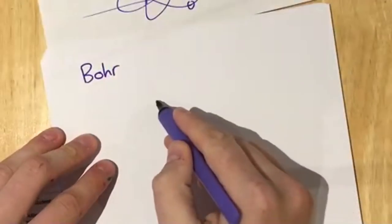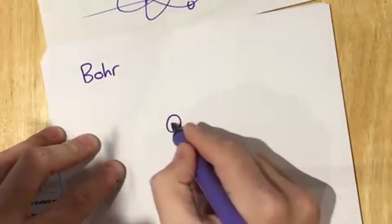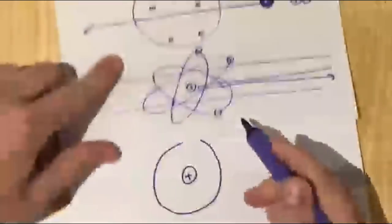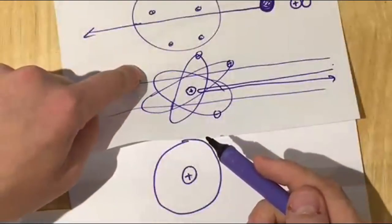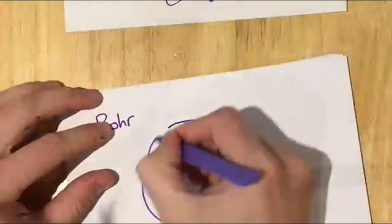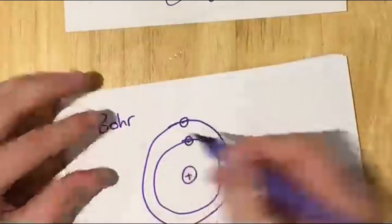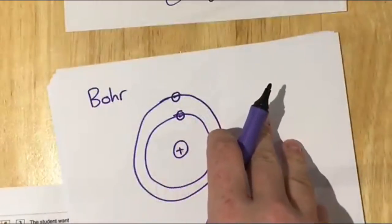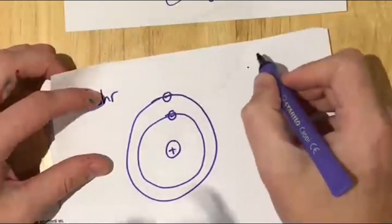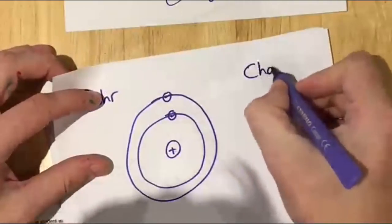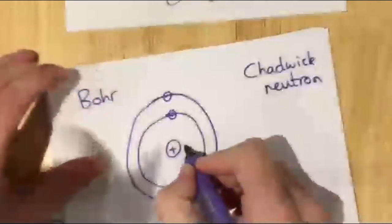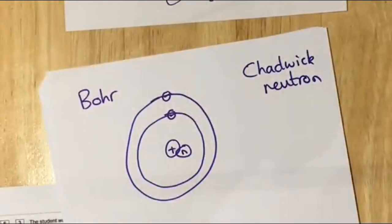Next came Niels Bohr, who showed that instead of electrons moving randomly, they have set orbits — they go around in shells. James Chadwick then discovered the neutron.